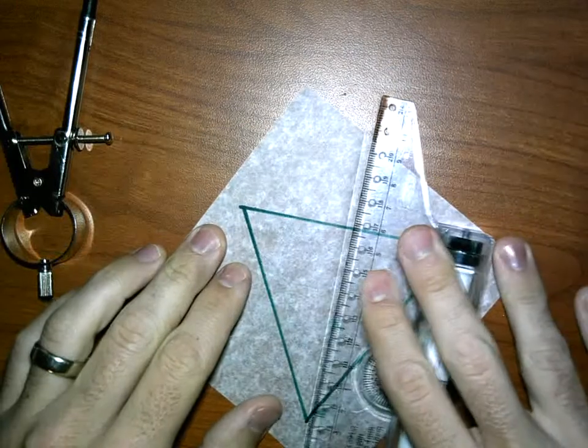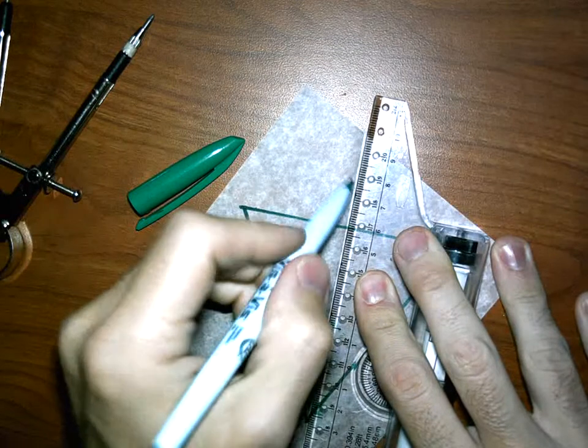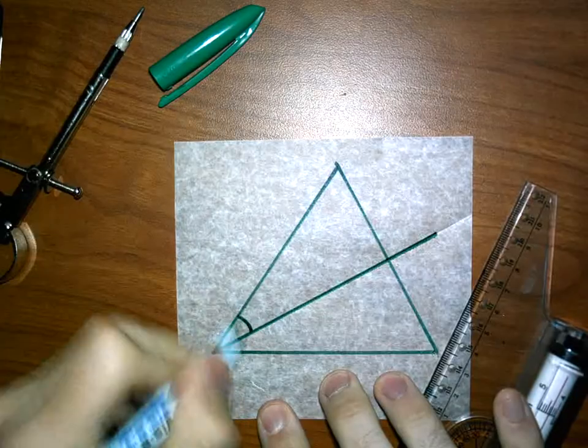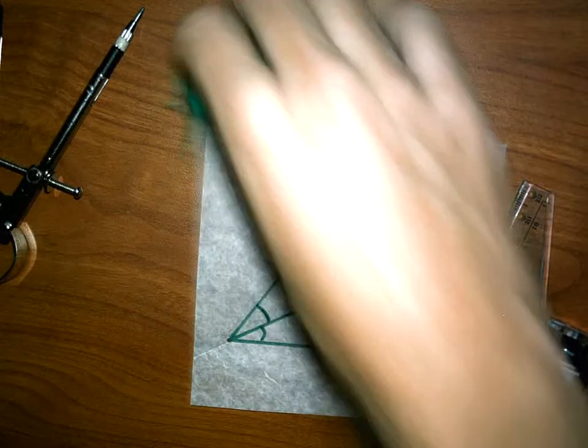So that is our angle bisector. And of course it has to go through the vertex, because if it's bisecting the angle, it should be bisecting the vertex. So now I'm saying that this angle has two measurements that are the same if I measure them with a protractor.